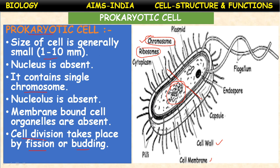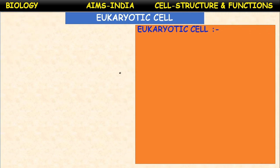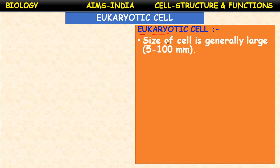Next, eukaryotic cell: 'eu' means true, 'karyon' means nucleus. A cell with a true nucleus is called a eukaryotic cell. The size of the cell is generally large — 5 to 100 micrometers in size, compared to 1 to 10 micrometers for prokaryotic cells.